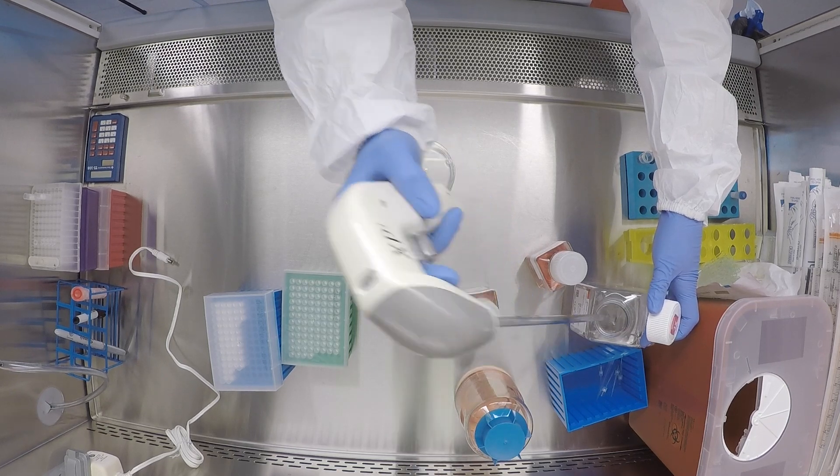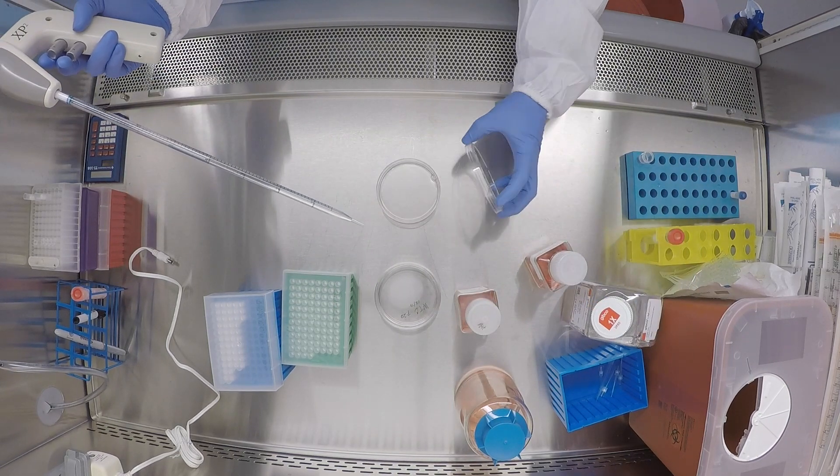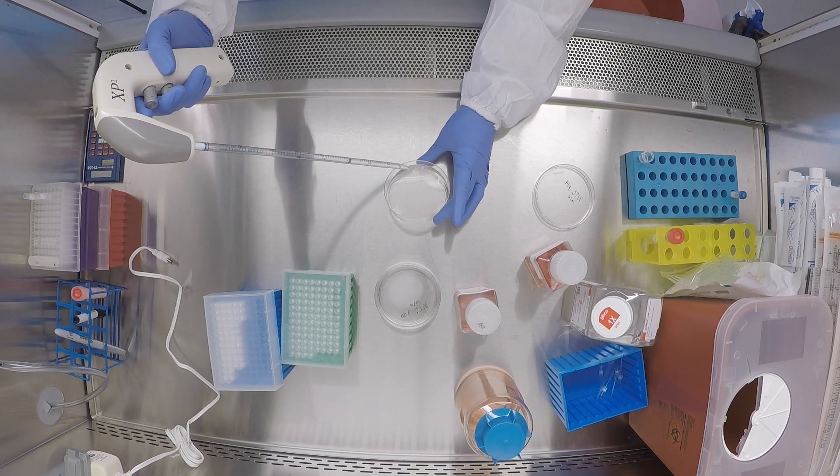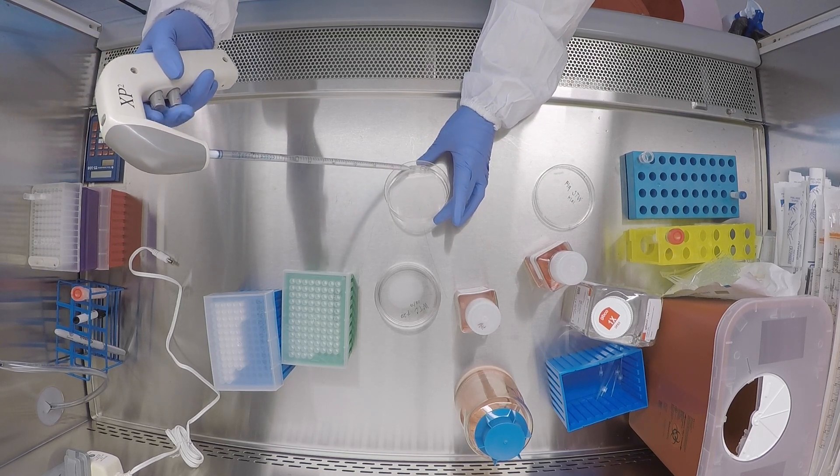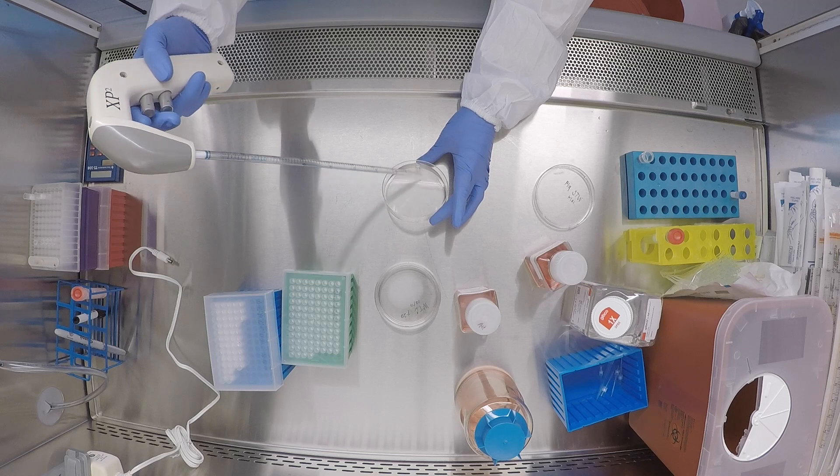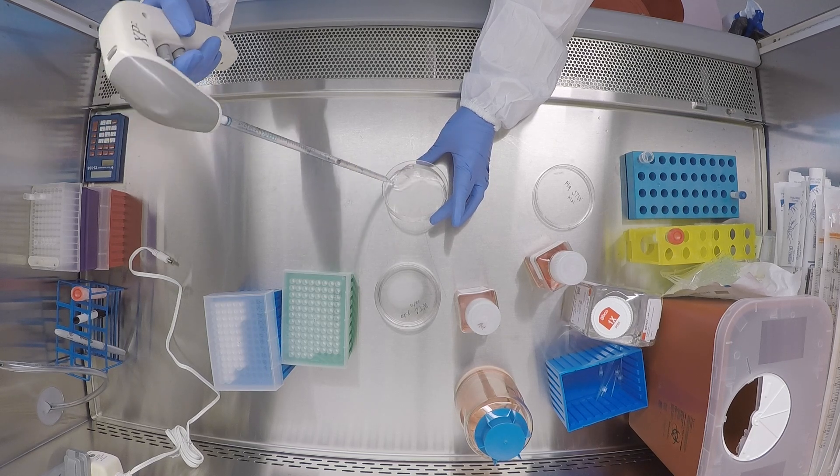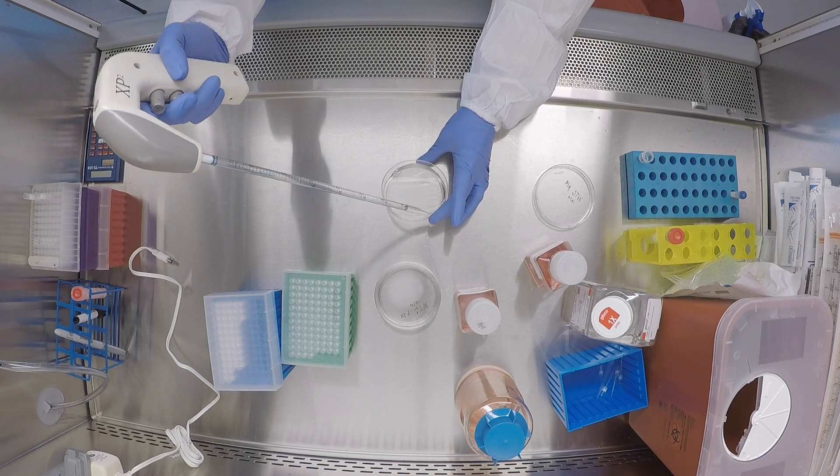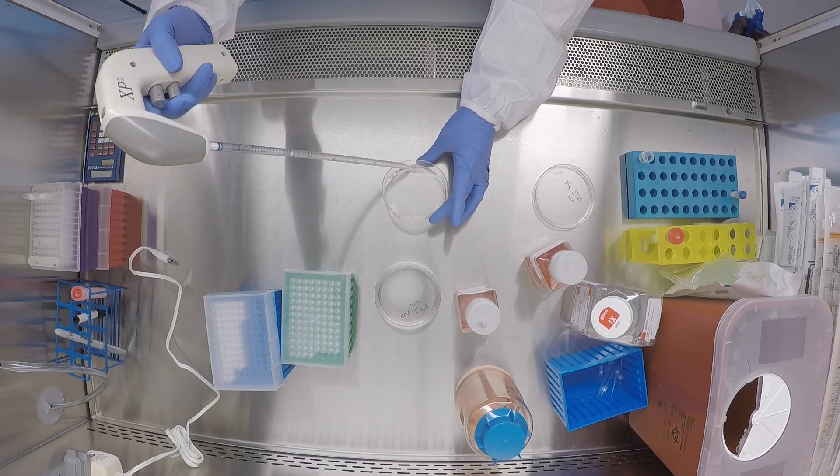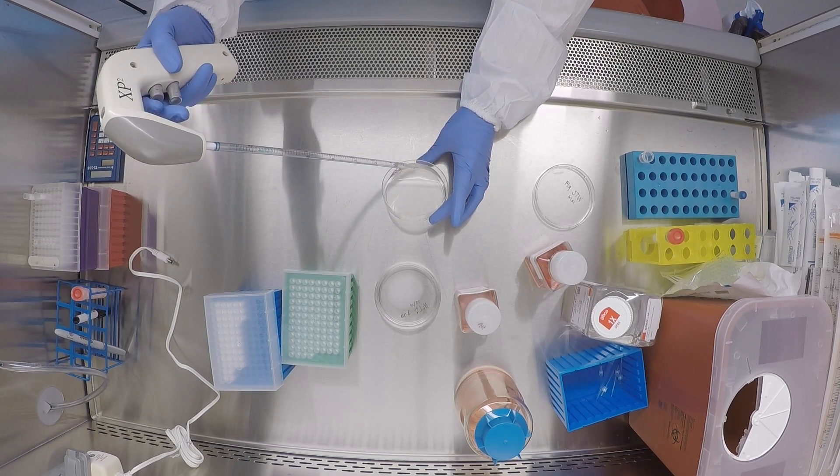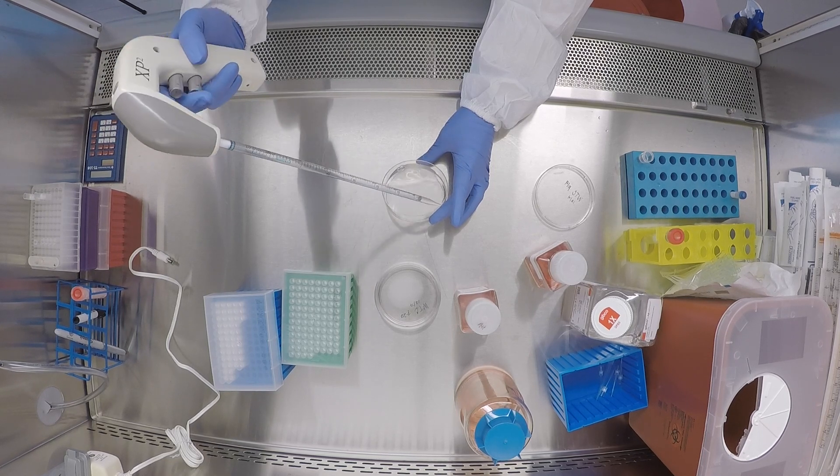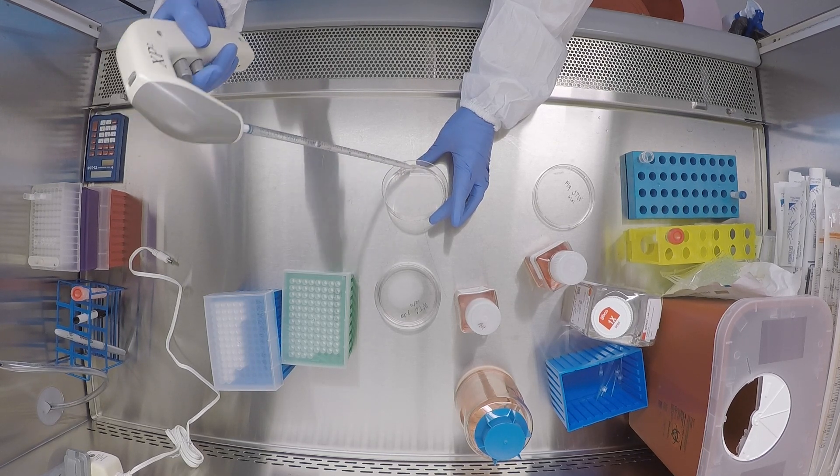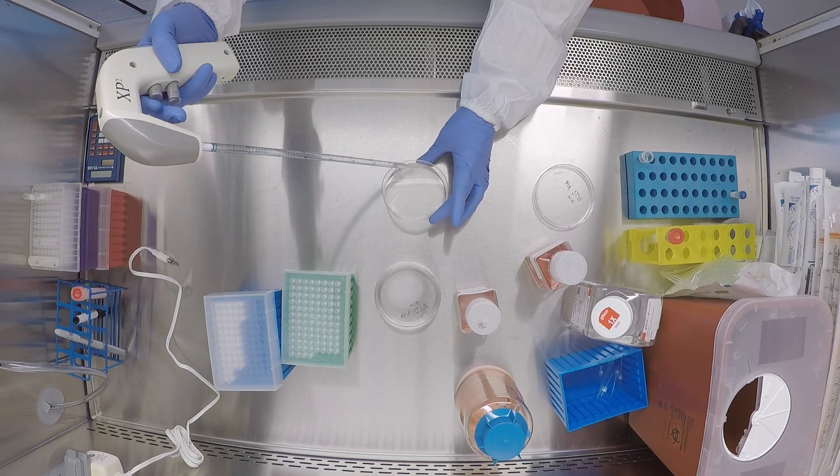I'm going to use some PBS to triturate these. I'm just going to take everything up and sort of gently swirl around the plate, just to release everything from the plate and gently take the cells up. I also have my pipette set to slow on the down speed so that I'm not providing too much force when I do this.